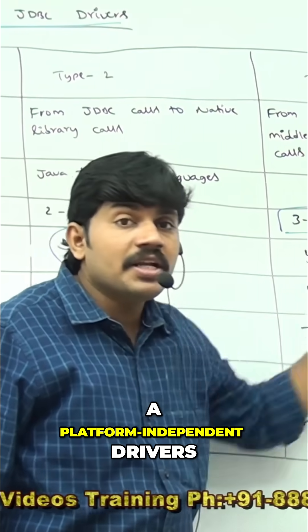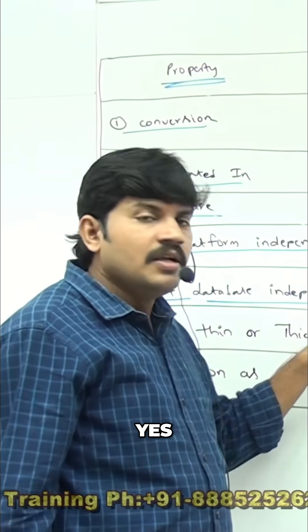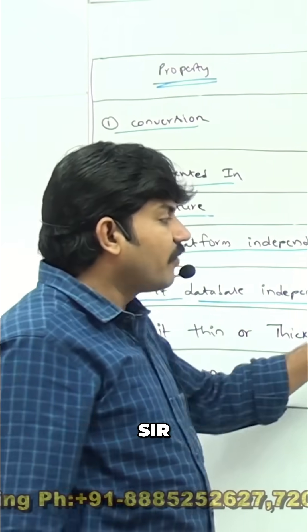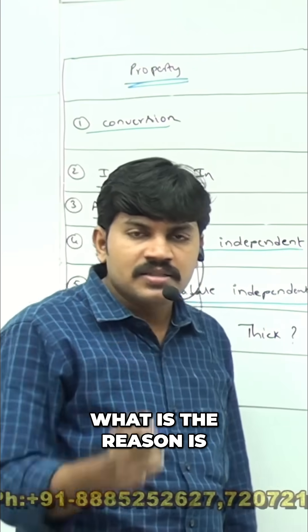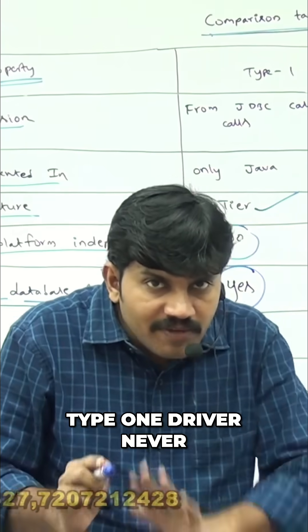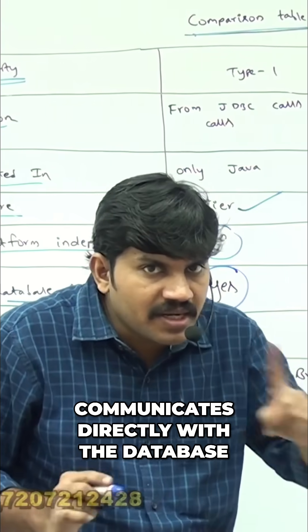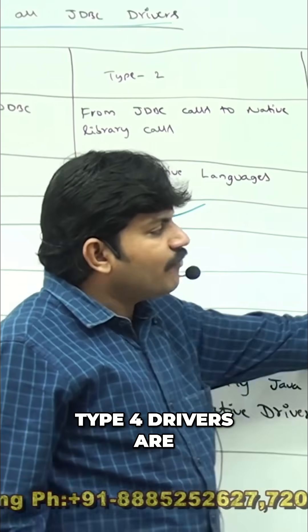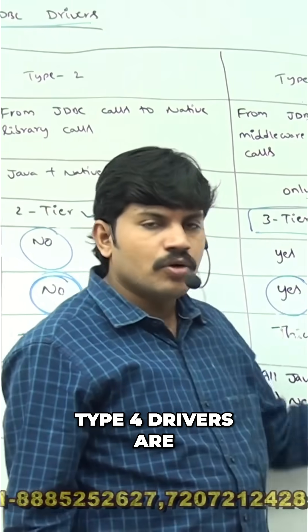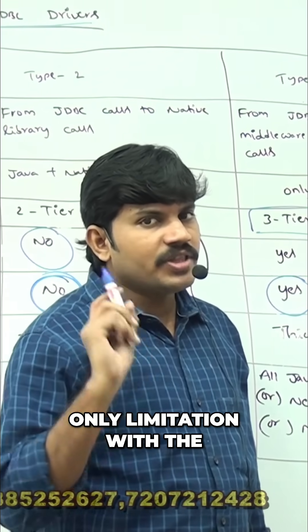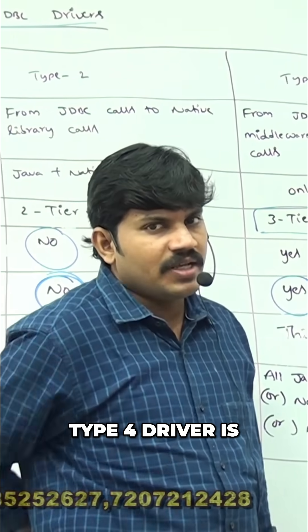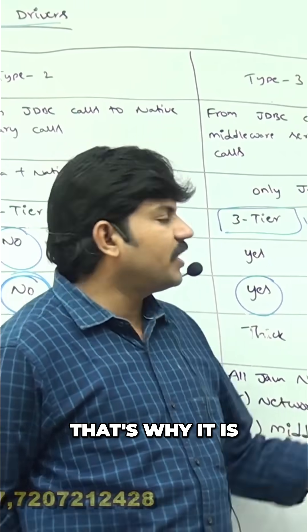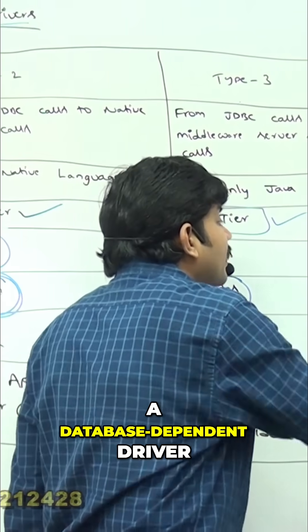Type 1 driver is database-independent because it never communicates directly with the database — it does so via the ODBC driver. Type 4 driver's limitation is that it communicates directly with the database, making it a database-dependent driver.